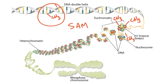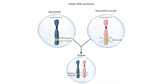Two clinical disorders commonly associated with imprinting are Prader-Willi syndrome and Angelman syndrome. This is a figure of the genetics of Prader-Willi syndrome. Notice that a spermatid is shown on the left and a secondary oocyte is shown on the right. When these two cells fuse, they form a zygote. You can see that the long arm of chromosome 15 contains the PWS gene. Both Prader-Willi syndrome and Angelman syndrome involve chromosome 15, more specifically the section Q11 to Q13.